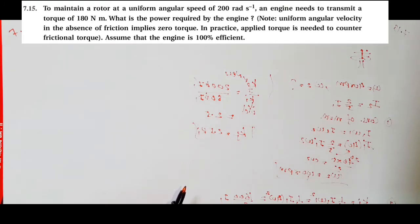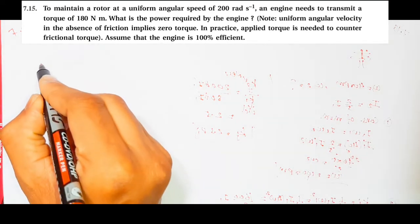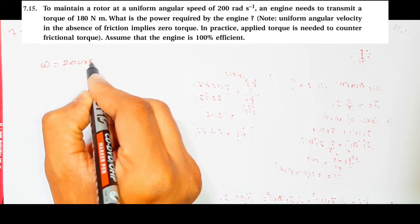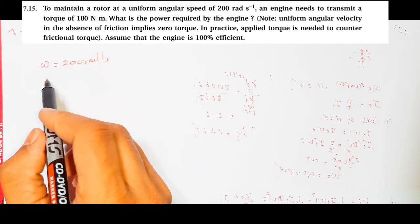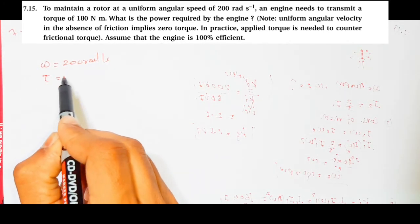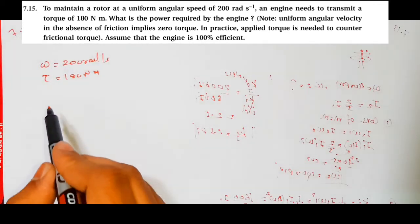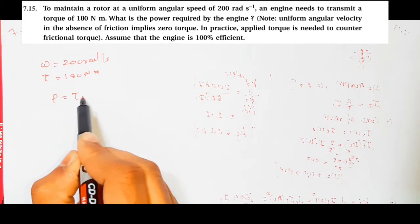So we can directly write: omega is equal to 200 radians per second, and torque will be 180 Newton meters. So power P is equal to torque times omega.